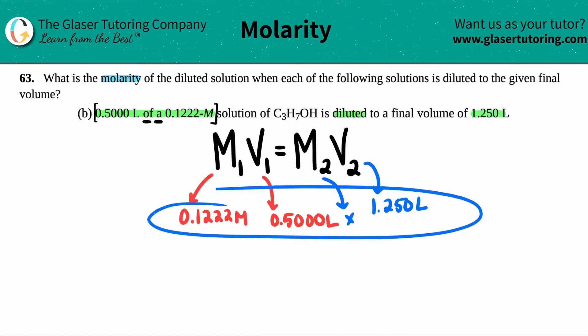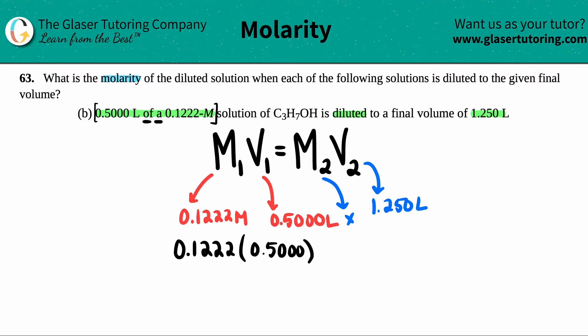Now I have all my four numbers and a variable which is X, so I'm just going to plug it right into the formula: 0.1222 times 0.500 equals X times 1.250. I got rid of the units when I do my math just because I can say X equals and then I know what unit will be the answer.